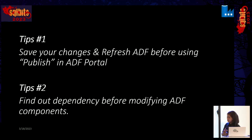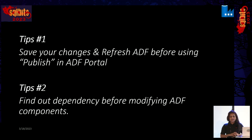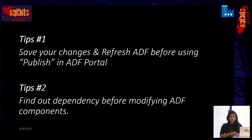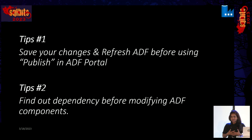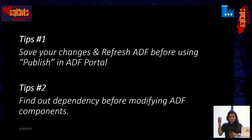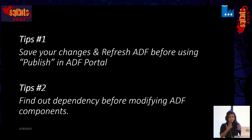Tip two is: when you would like to modify any object — like pipelines, datasets, data flows, or linked services — you should first find out the dependencies. Who is using that object? Because sometimes you overwrite a change for a particular business outcome, but that object is used by a different business outcome as well, and you will get problems later on. Always try to find out the dependency first.